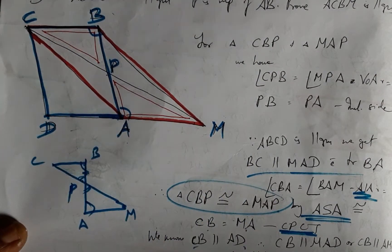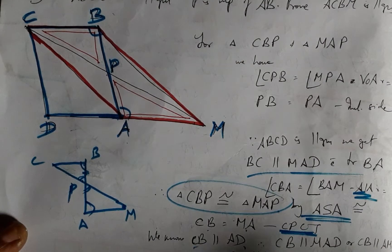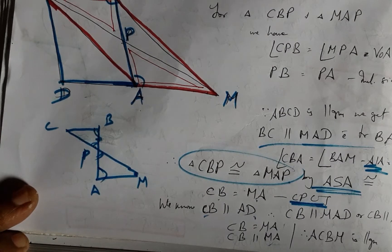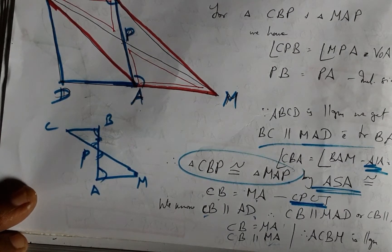Therefore, once this is achieved parallel and equal, then ACBM is a parallelogram. Hence proved.